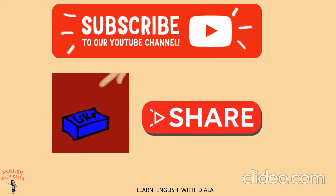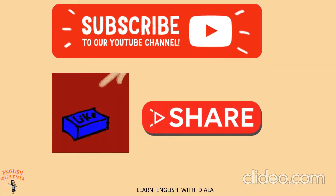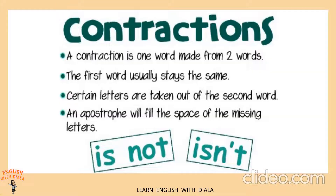Today's lesson is about contractions. What are contractions? A contraction is one word made from two words. The first word usually stays the same. Certain letters are taken out of the second word. An apostrophe will fill the space of the missing letters. For example: is not — isn't.